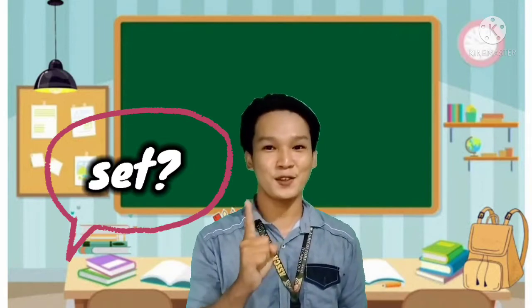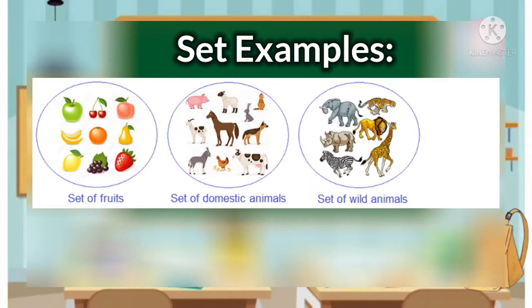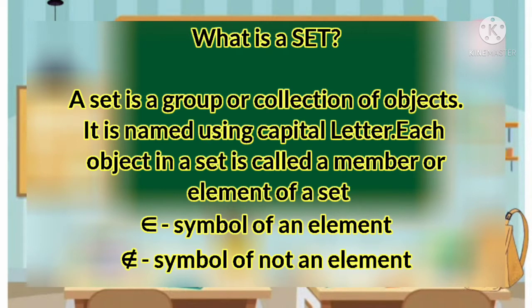This is the definition of a set. Before we proceed to the definition, let's first have some set examples. We have a set of fruits, a set of domestic animals, and also a set of wild animals. So these groups are called sets. A set is a group or collection of objects. It is named using capital letters. Each object in a set is called a member or an element of the set. Take note of the symbol of an element.